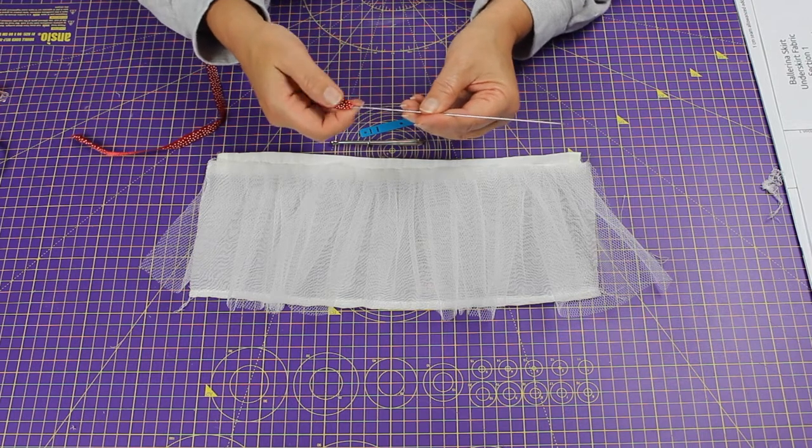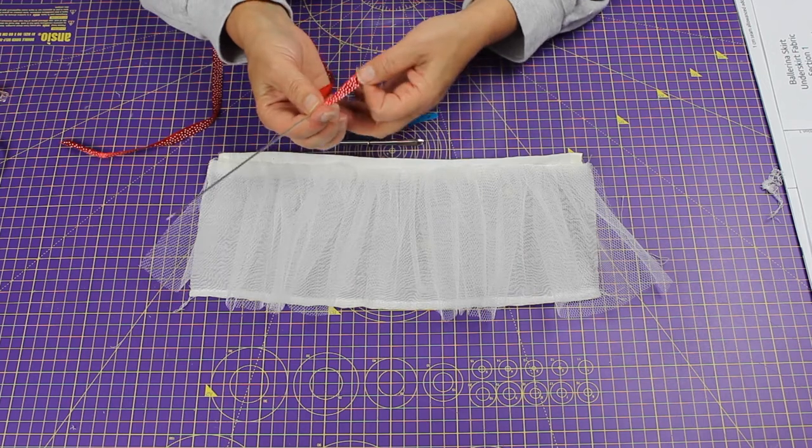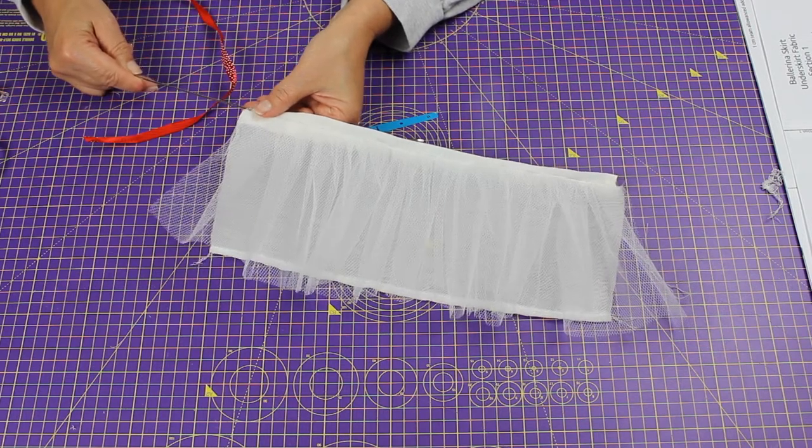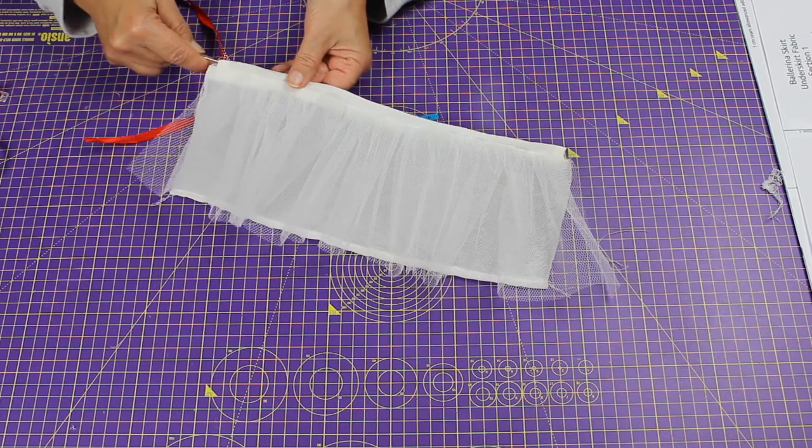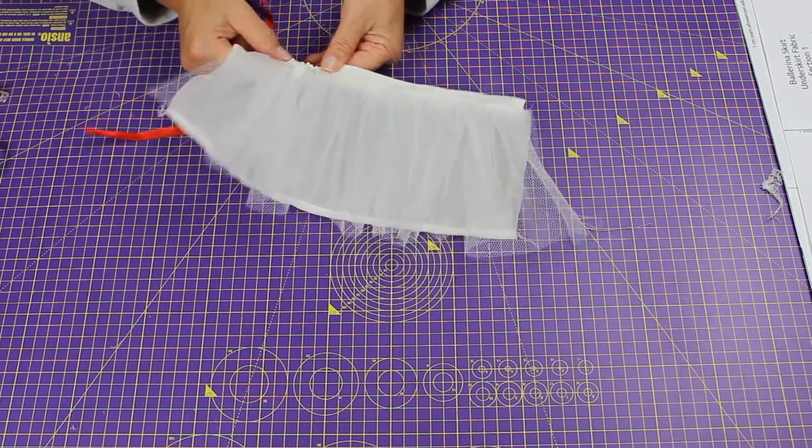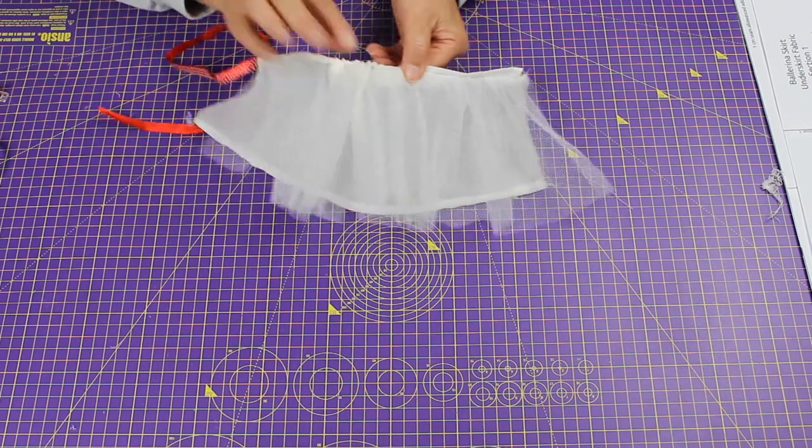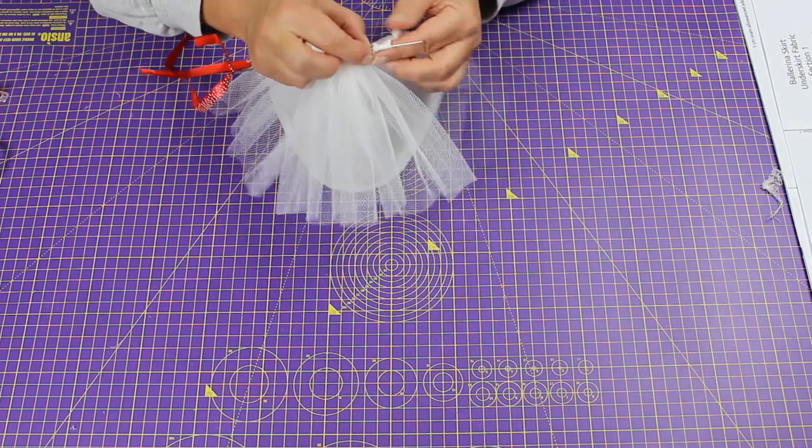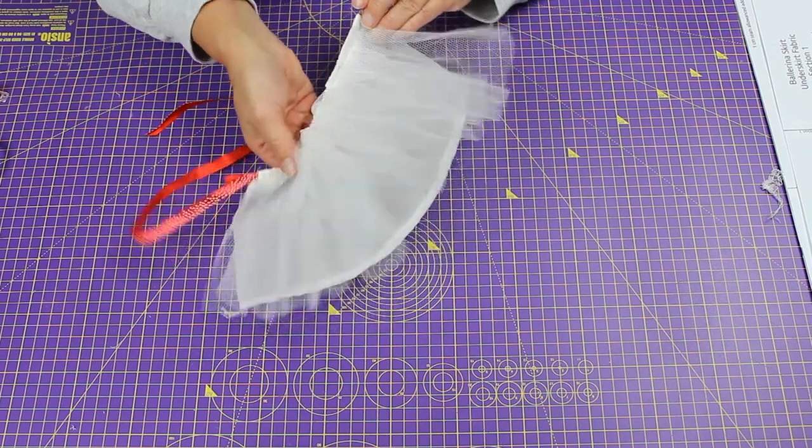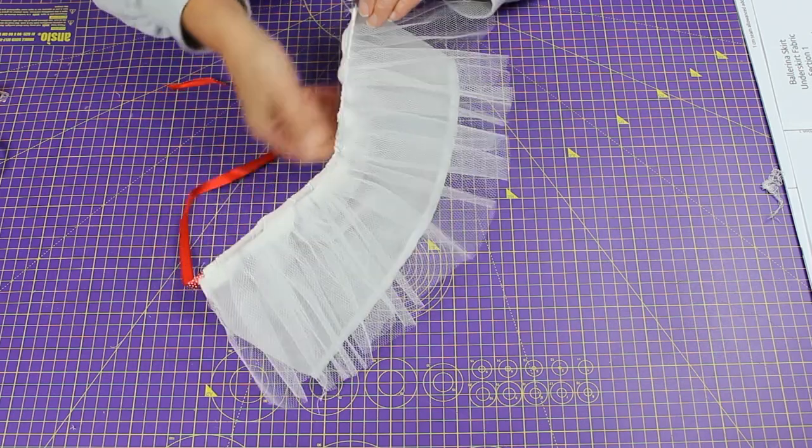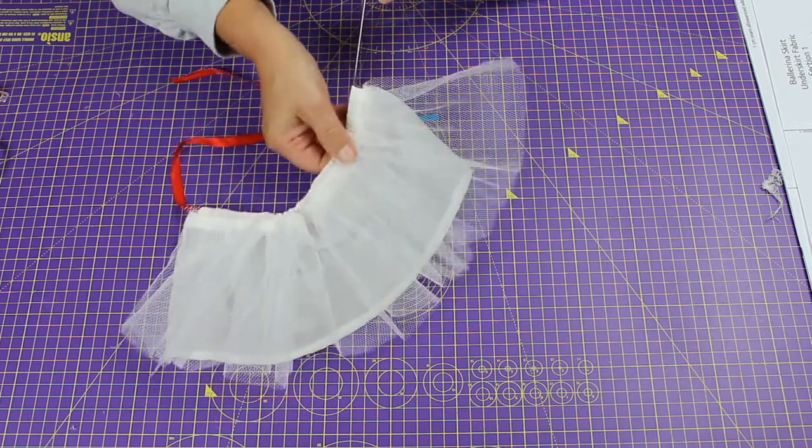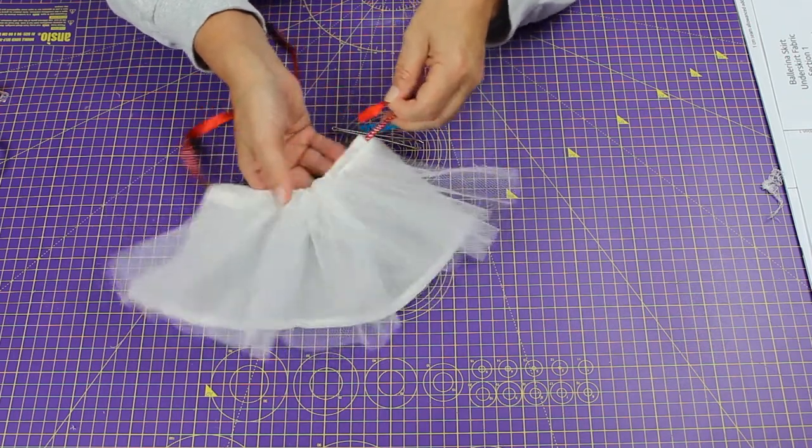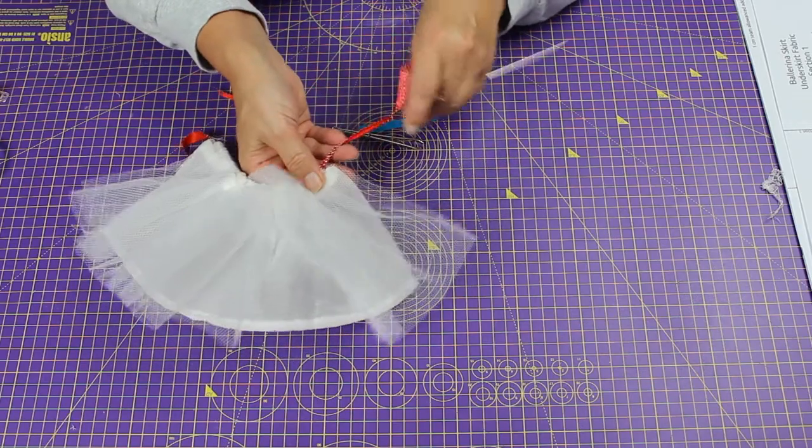I decided to use a darning needle and I popped my ribbon through there. If you're using elastic, you can pop it through. We're going to have to be very careful not to catch the fabric as I go through and just pass it through this narrow channel. These are the challenges we face when making these tiny garments.